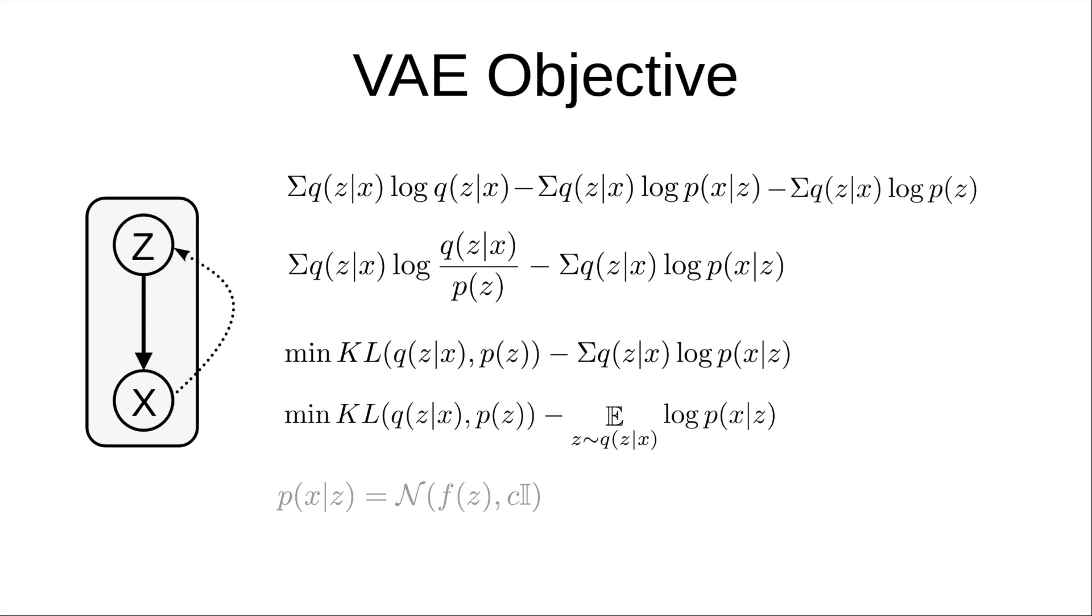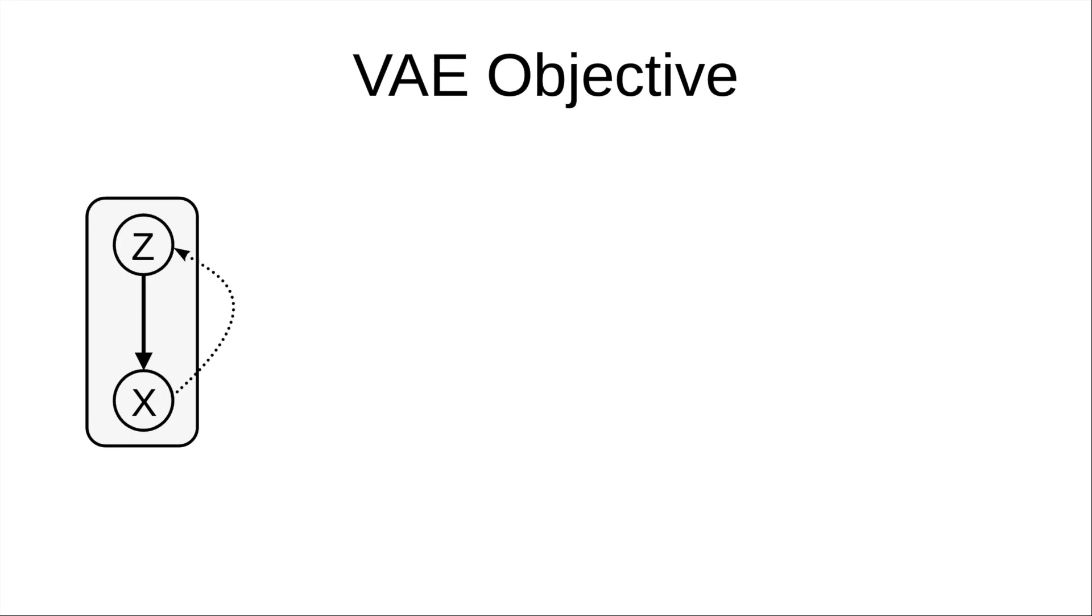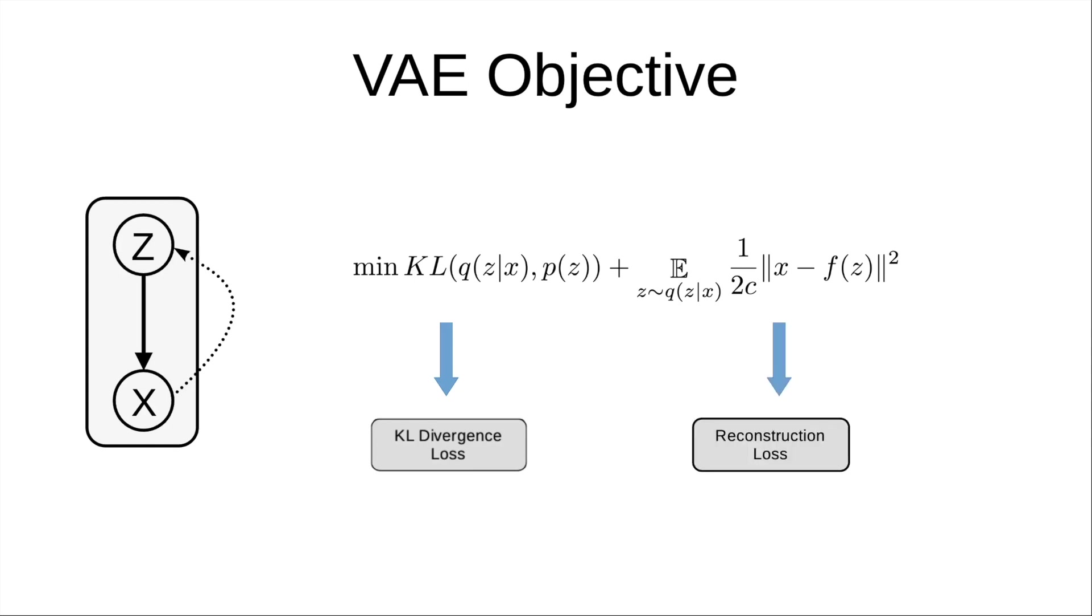Because we assume p(x|z) to be a Gaussian, we get the formulation of reconstruction as mean squared error. Finally, we reach the same conclusion, a KL divergence term between q(z) and p(z), which we assume to be a standard Gaussian, and a reconstruction loss term that we are trying to minimize.